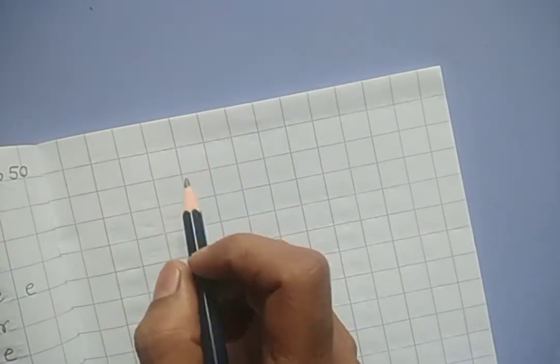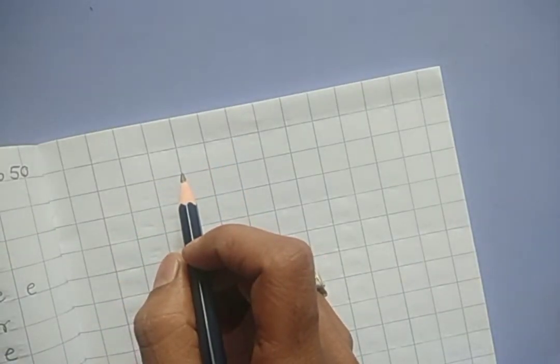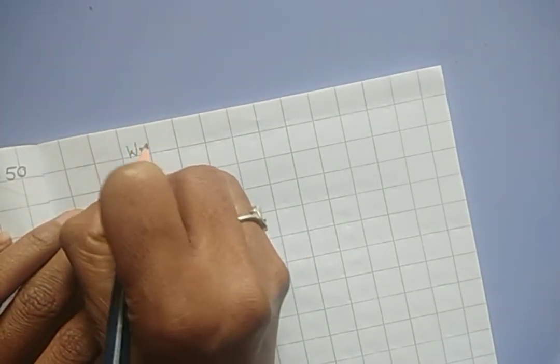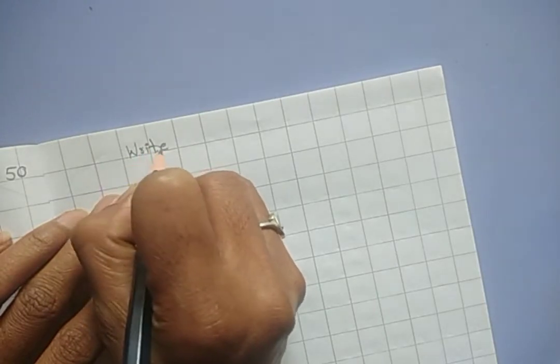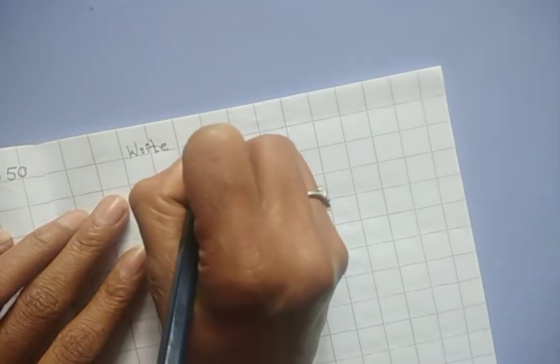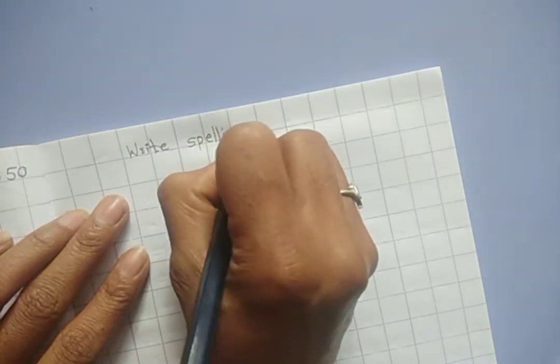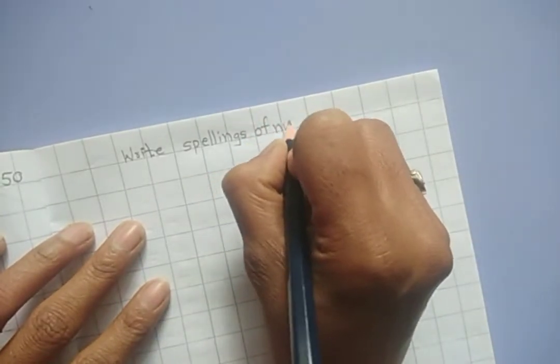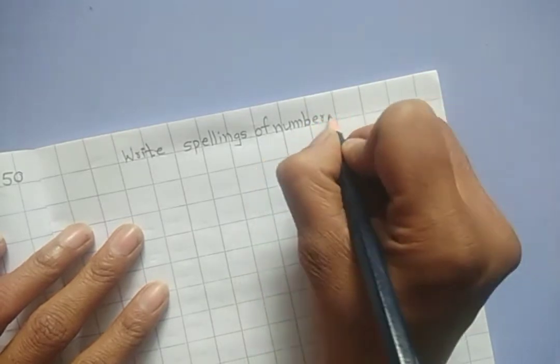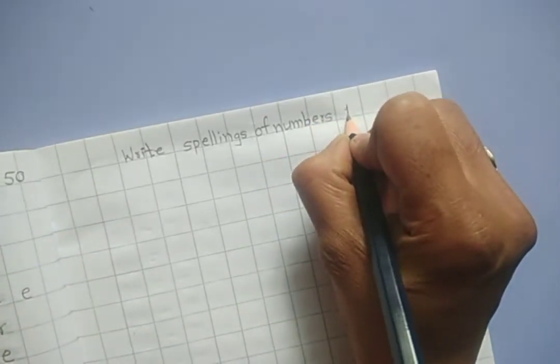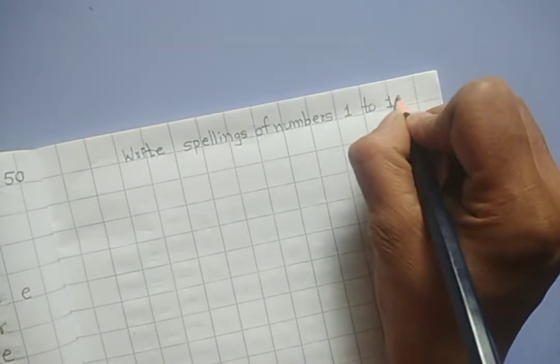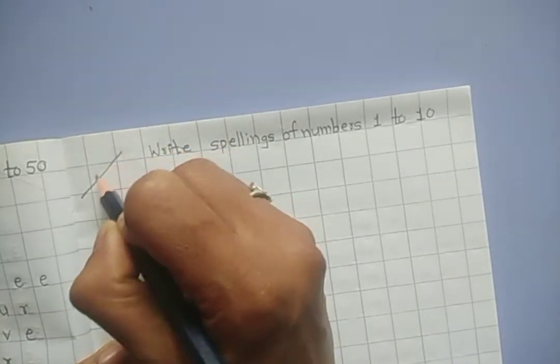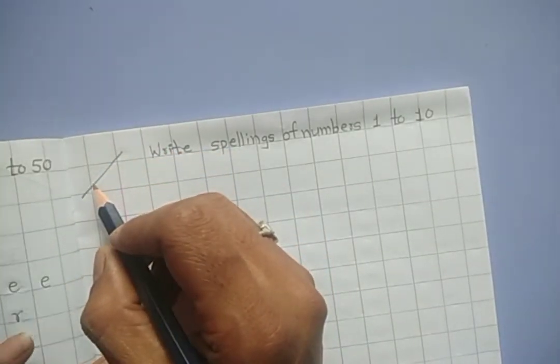Take out your maths notebook and in your maths notebook you have to write here, write W-R-I-T-E, write S-P-E-L-L-I-N-G spelling of N-U-M-B-E-R numbers 1 to 10. And here you have to mention the date of today. Here you don't have to write the date of today, okay?